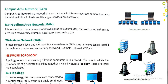Next is WAN — Wide Area Network. It interconnects local and metropolitan area networks. A Wide Area Network can be located throughout a country and even around the world. Examples are the internet and ATM. Wide Area Network means different countries or different continents connected — that means a whole world network. The example is the internet, which is a global network.